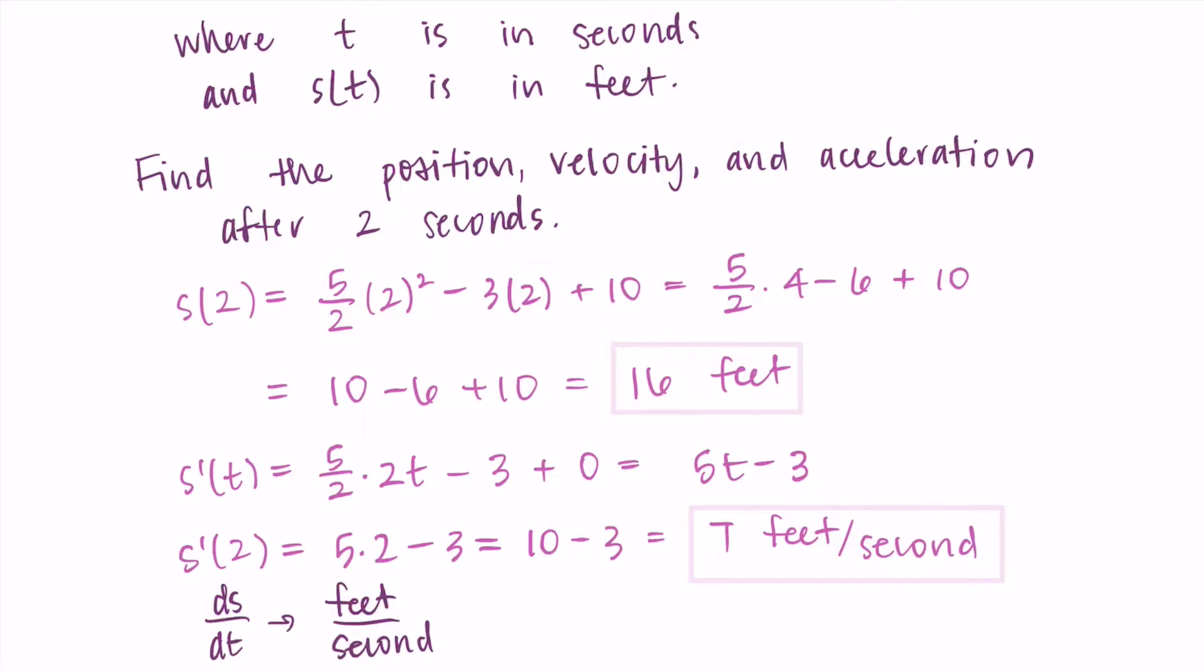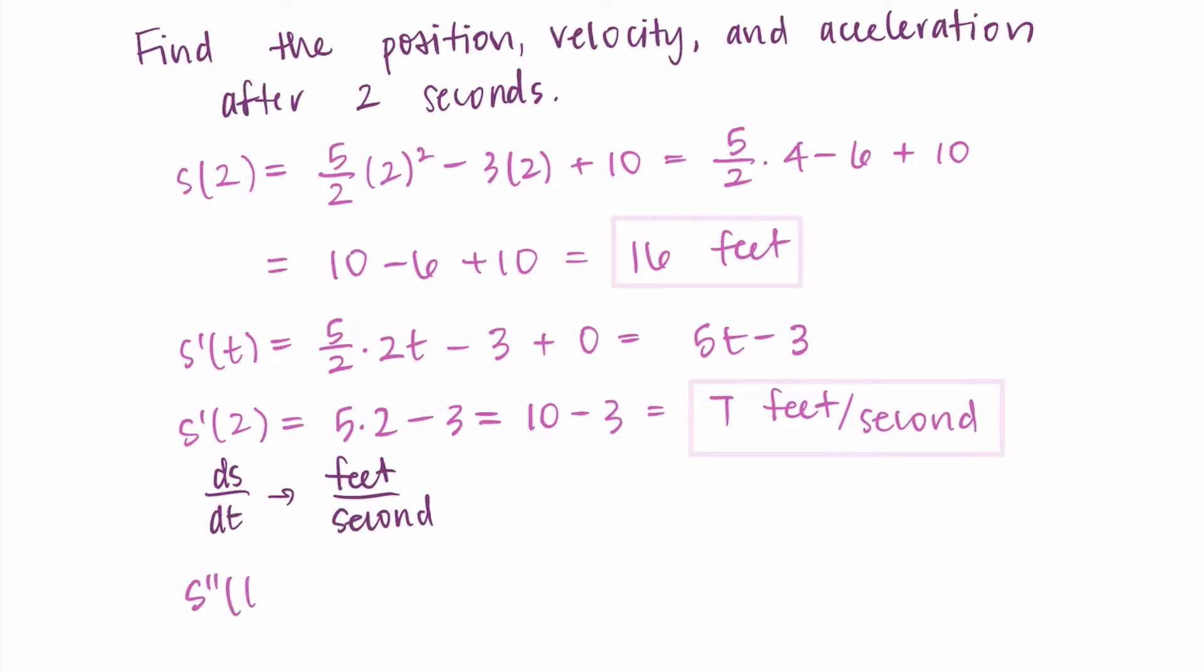So let's take the derivative again. I'm taking the derivative of 5t - 3, and that is just 5. So the acceleration is constant here, and we have feet per second squared as our acceleration.